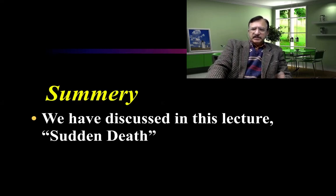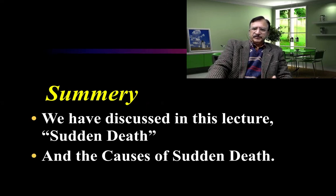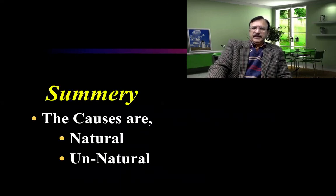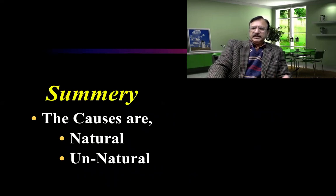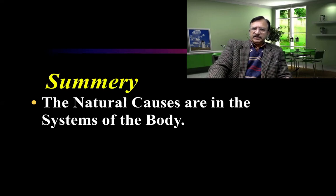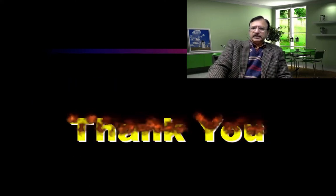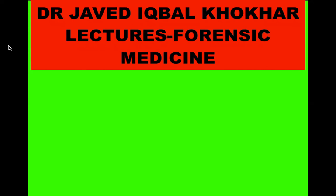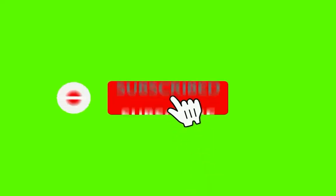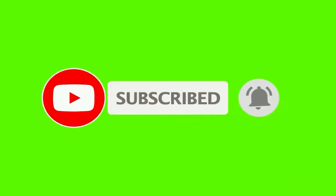In summary, this lecture discussed sudden death and its causes. We learned that sudden deaths are either natural or unnatural: natural causes are usually diseases of the body's systems, while unnatural causes include homicide, suicide, accident, or poisoning. Thank you very much. This is all about this section of lecture number three. If you like my videos, please subscribe to my channel, Dr. Javid.